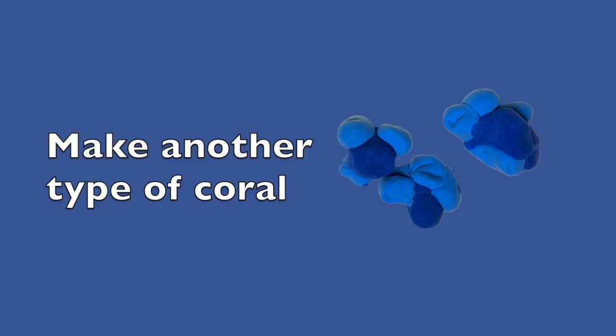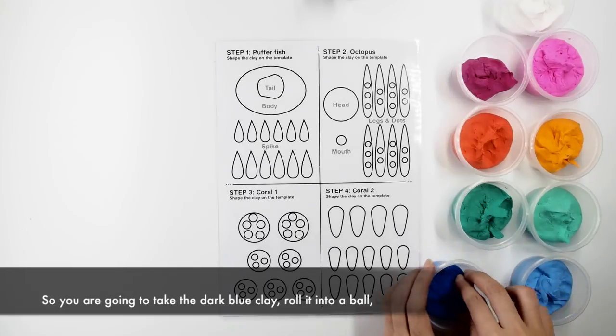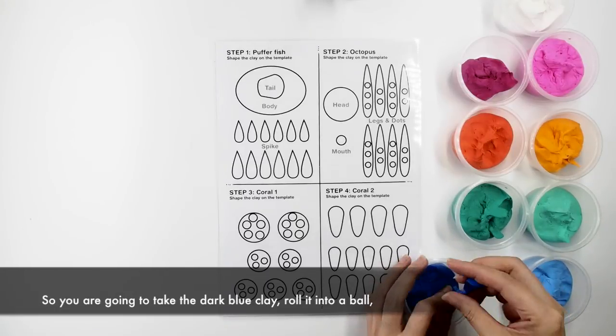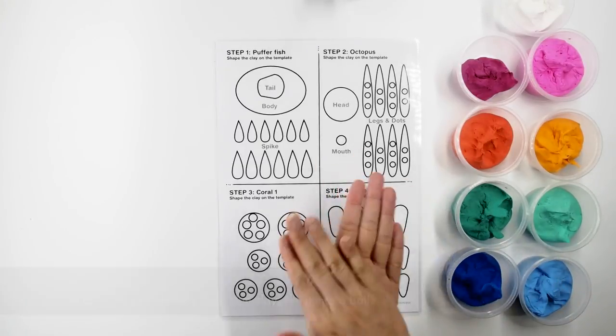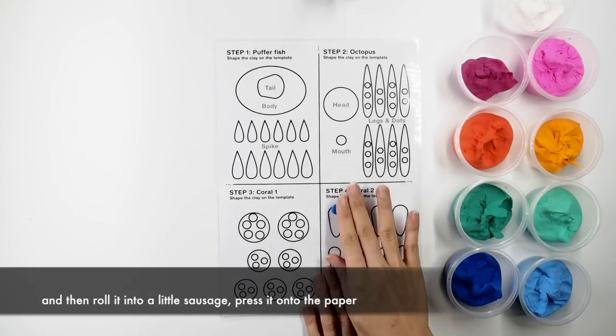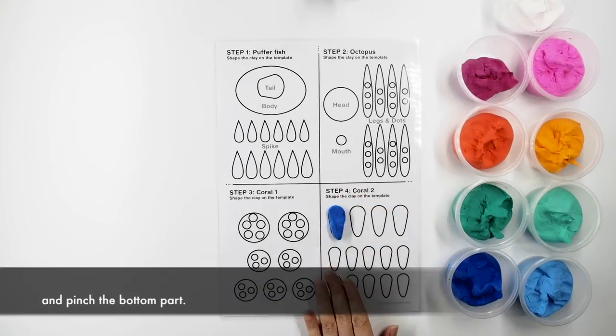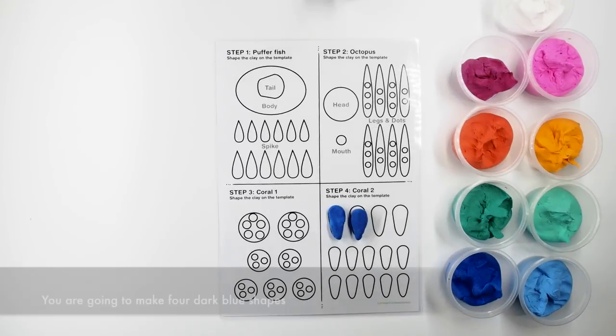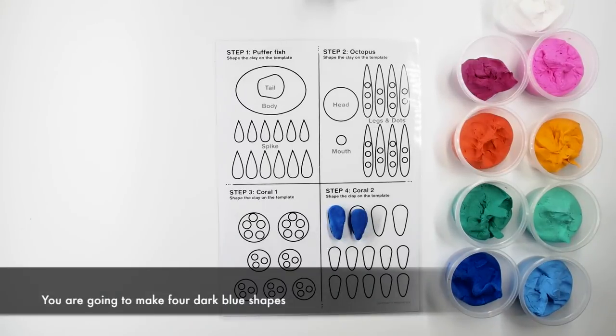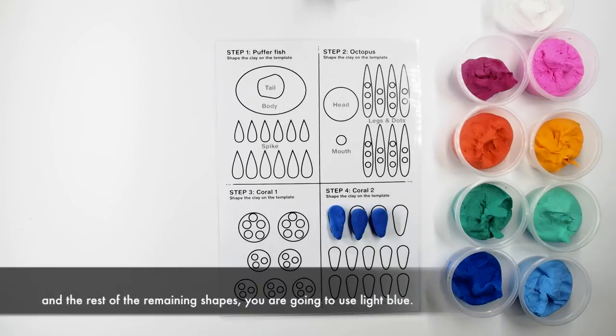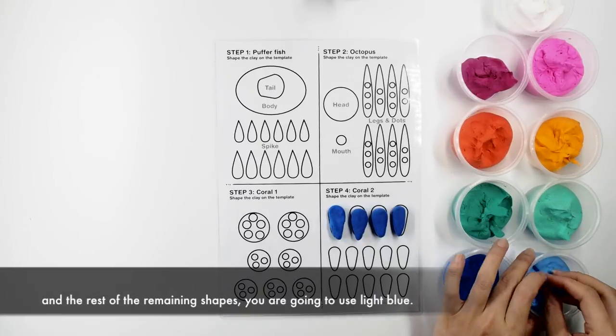Now let's make another type of coral. So you're going to take the dark blue clay, roll into a ball and then roll into a little sausage, press it onto the paper and pinch the bottom part. Now it's your turn. You're going to make four dark blue shapes and the rest of the little shapes, you're going to use the light blue.